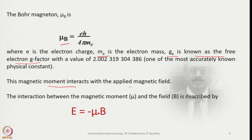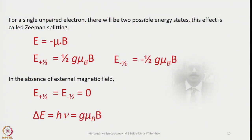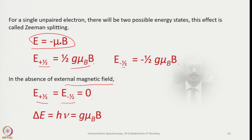This magnetic moment interacts with the applied magnetic field. The interaction can be described by E = μ·B. For a single unpaired electron there are two possible energy states — the Zeeman splitting: E(+½) = +½ gμ_B B and E(−½) = −½ gμ_B B. In the absence of an external field both energies are zero. The energy difference between the two levels is hν = gμ_B × B₀.